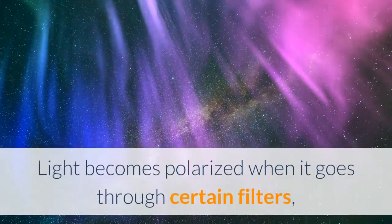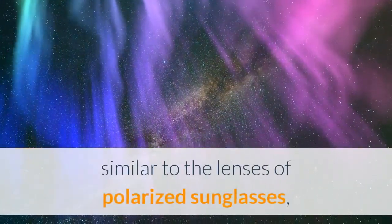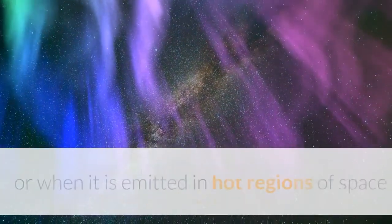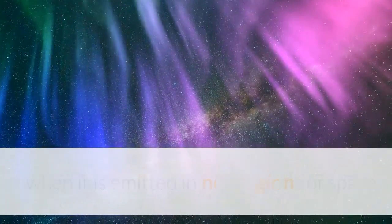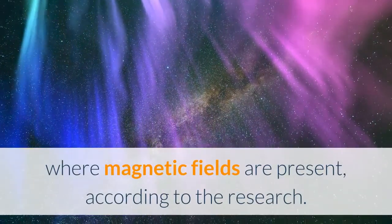Light becomes polarized when it goes through certain filters, similar to the lenses of polarized sunglasses, or when it is emitted in hot regions of space where magnetic fields are present, according to the research.